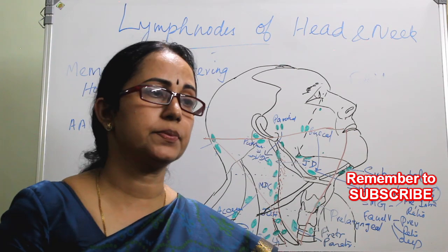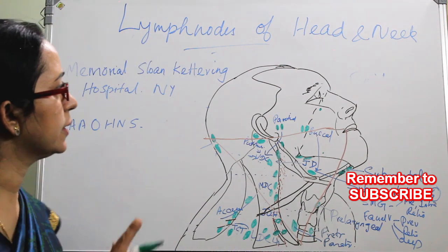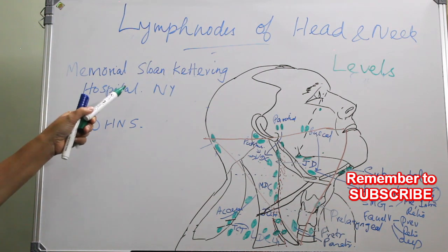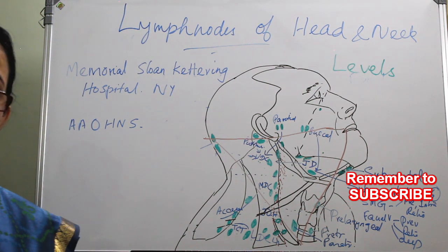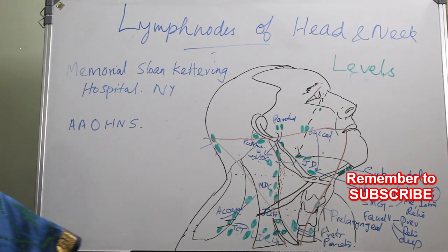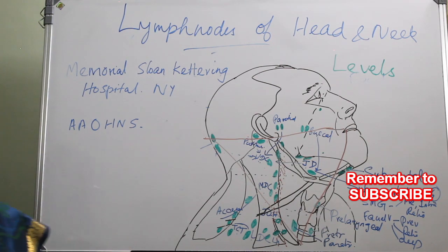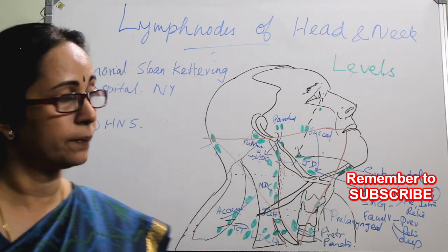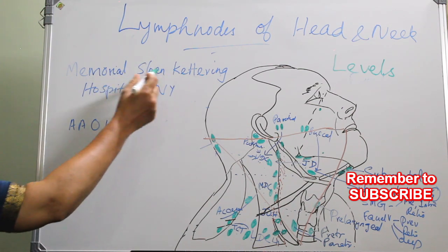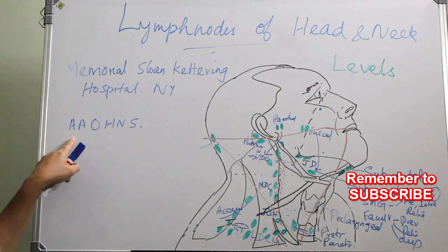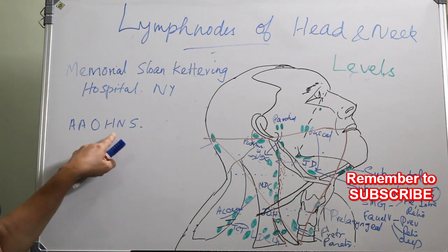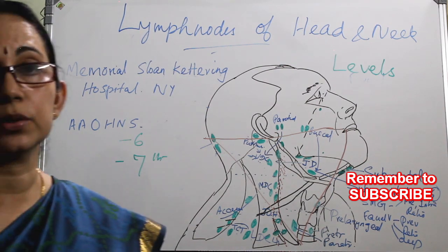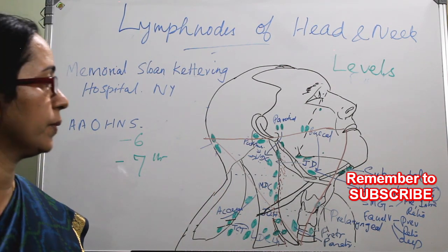To get an accurate description of the pattern of spread of lymph nodes, the levels classification was described by the Memorial Sloan-Kettering Hospital of New York and adopted by the American Academy of Otolaryngology and Head and Neck Surgery. According to that, there are six groups of lymph nodes, and a seventh group is not included in most American textbooks — the superior mediastinal nodes.